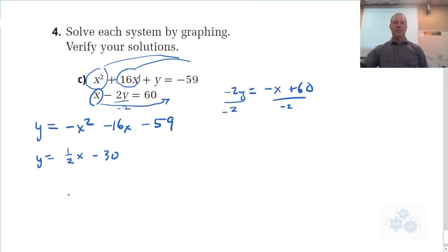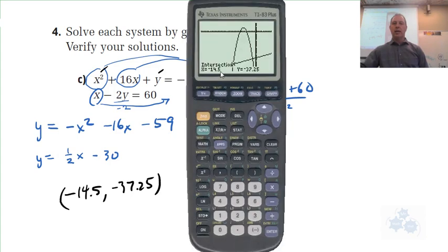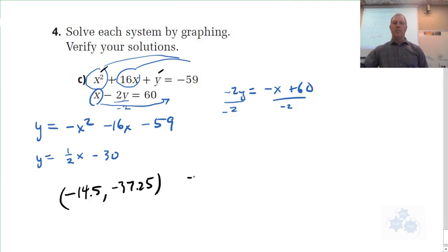So negative 14.5, negative 37.25. Okay, so there's one solution for x and Y. And the other solution should come at the other intersection point. So let's do that quickly again. Function five, enter, enter, and then I'm going to move that cursor over to say, hey calculator, please give me the intersection point over here. Enter one more time, and negative 2, negative 31.